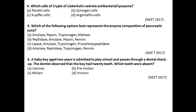Question number six: A baby boy aged two years admitted to play school passed through a dental checkup. The dentist observed that the boy had 20 teeth. Which teeth were absent? According to dentition, premolars are absent in children. So option B is correct for this question.